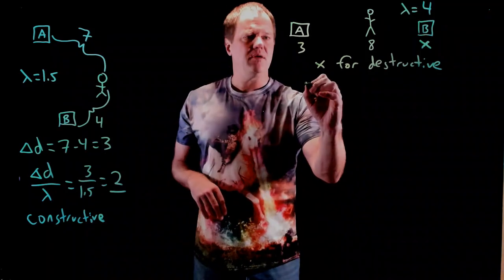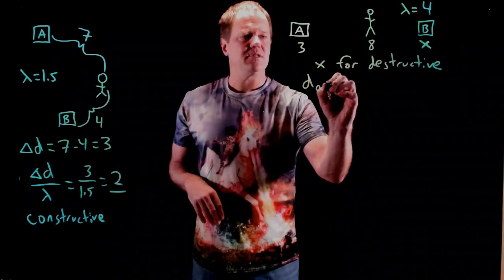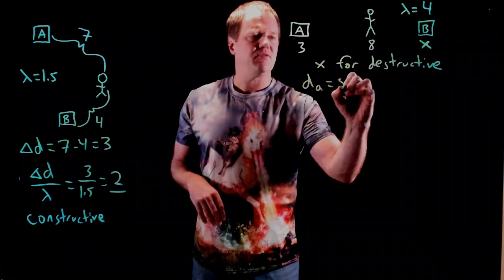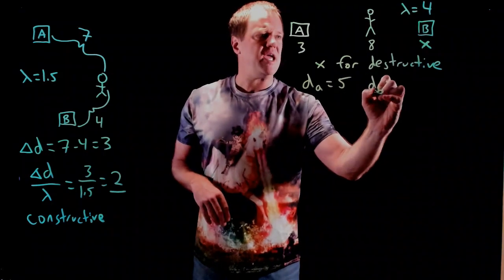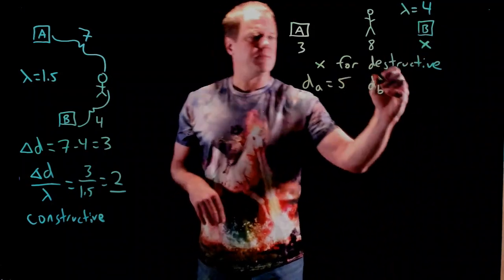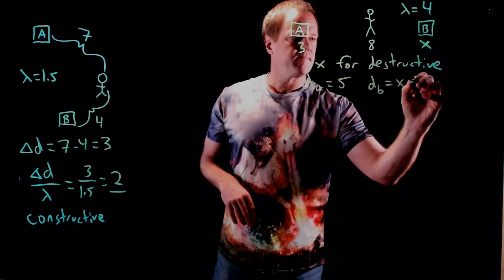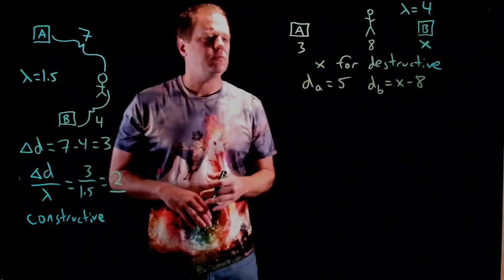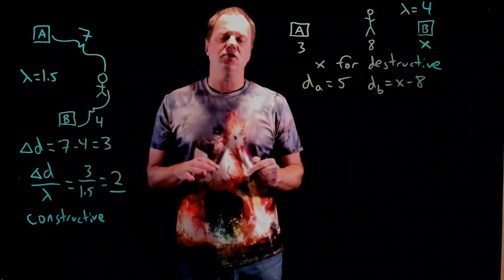Let's find distance to A. Distance to A, 8 minus 3, giving us 5. Distance to B, x minus 8. And then we need to subtract in order to determine the path difference.